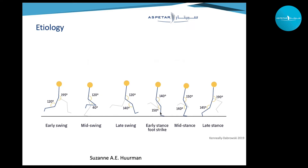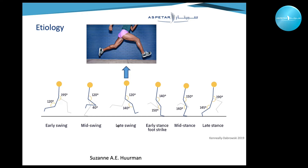Looking at the etiology of sprinting, there are different phases: swing phases — early, mid, and late — and stance phases — early, mid, and late. Just before the foot strikes the ground, between the late swing and early stance, is exactly where most hamstring injuries occur during sprinting.